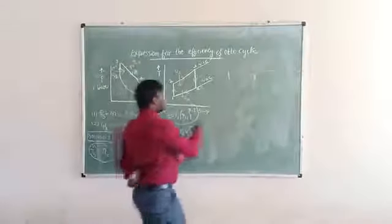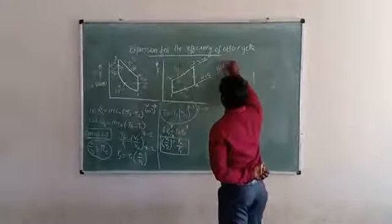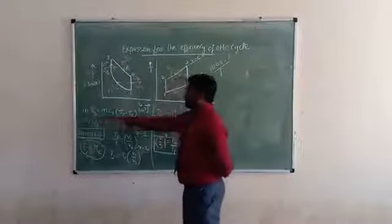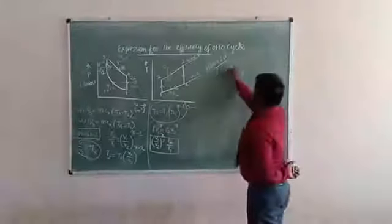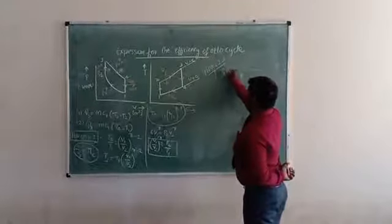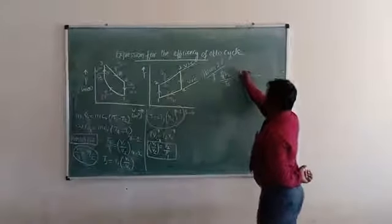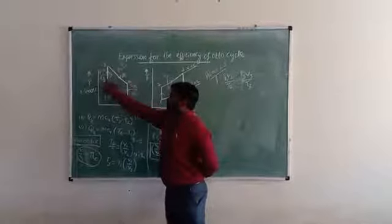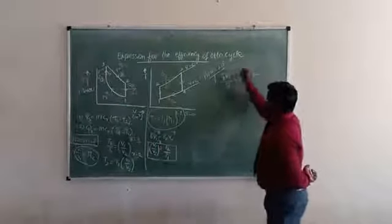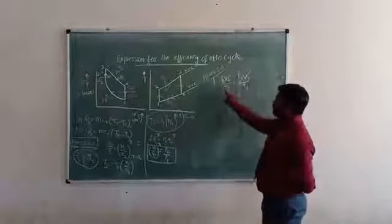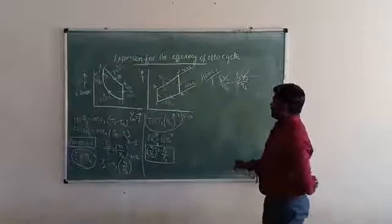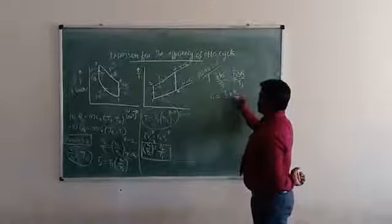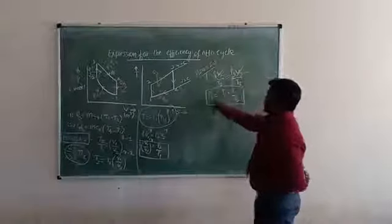Process 2-to-3 is the constant volume heat addition process. We already have Qs = mCv(T3 - T2). For this constant volume process, P2/T2 = P3/T3. Since V2 = V3, they cancel, and we get P2/T2 = P3/T3. From this we can find P3 = P2 × T3 / T2.